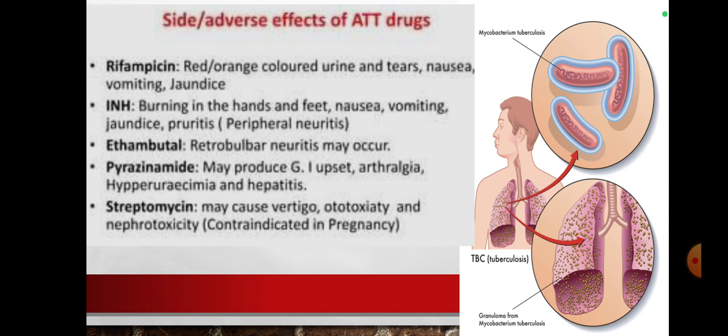The side effects of ATT drugs: For rifampicin, the side effects are red or orange color urine and tears, nausea, vomiting, jaundice, etc. For INH, the side effects are burning in the hands and feet, nausea, vomiting, jaundice, pruritus, and peripheral neuritis.